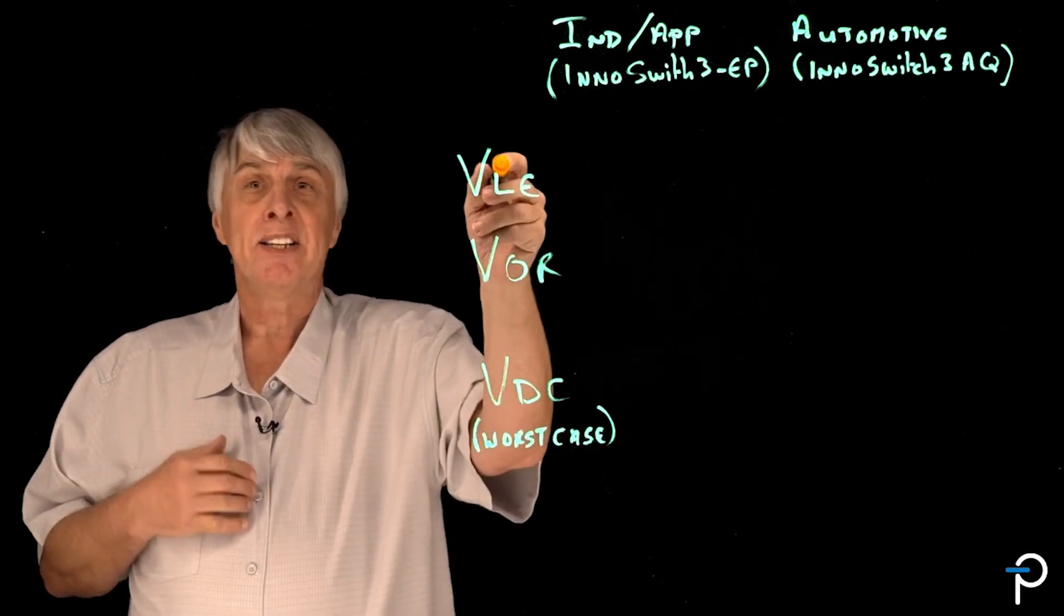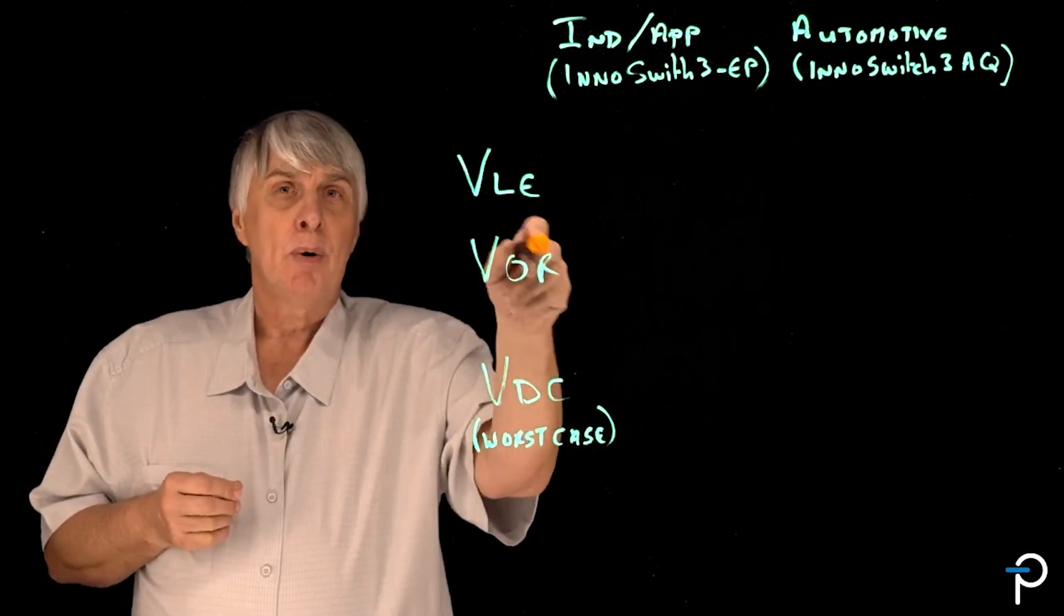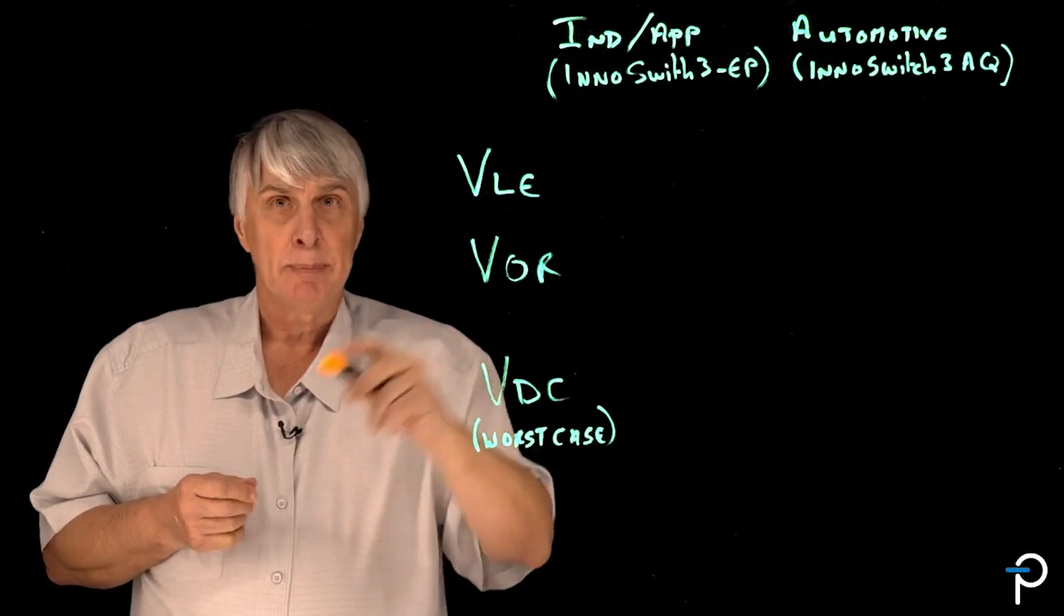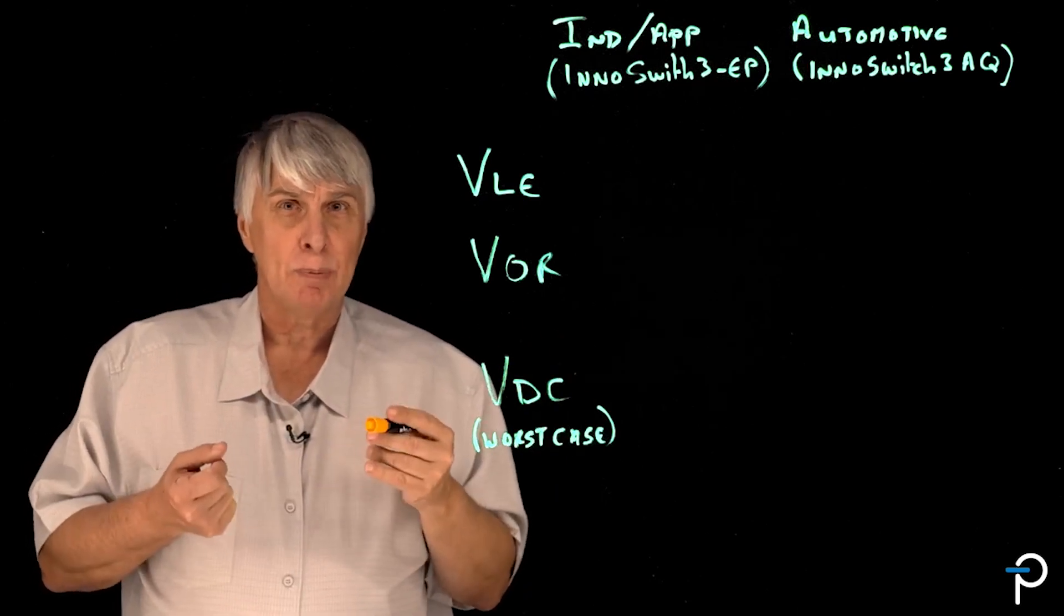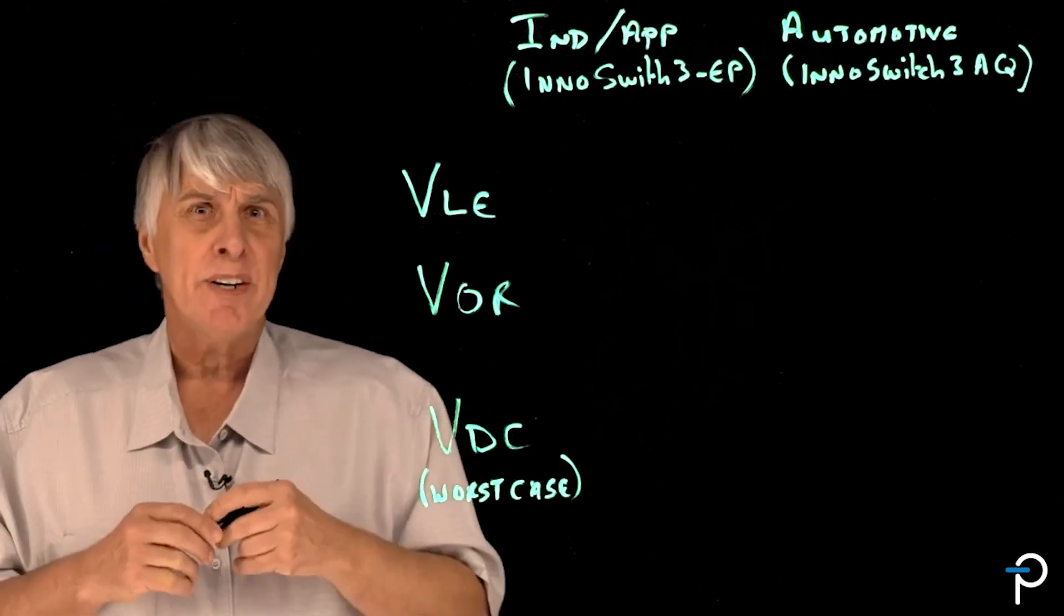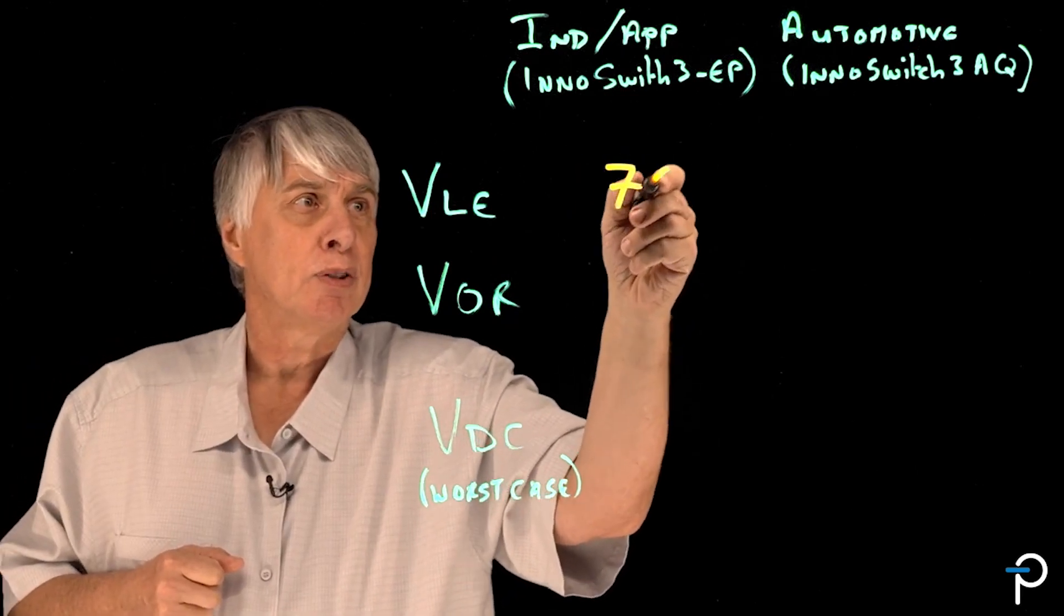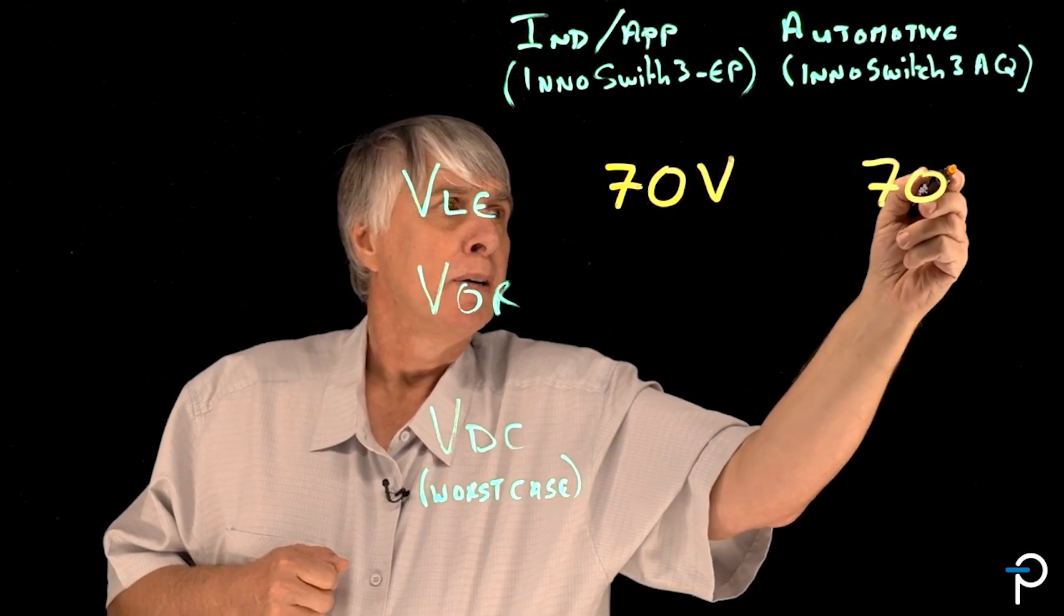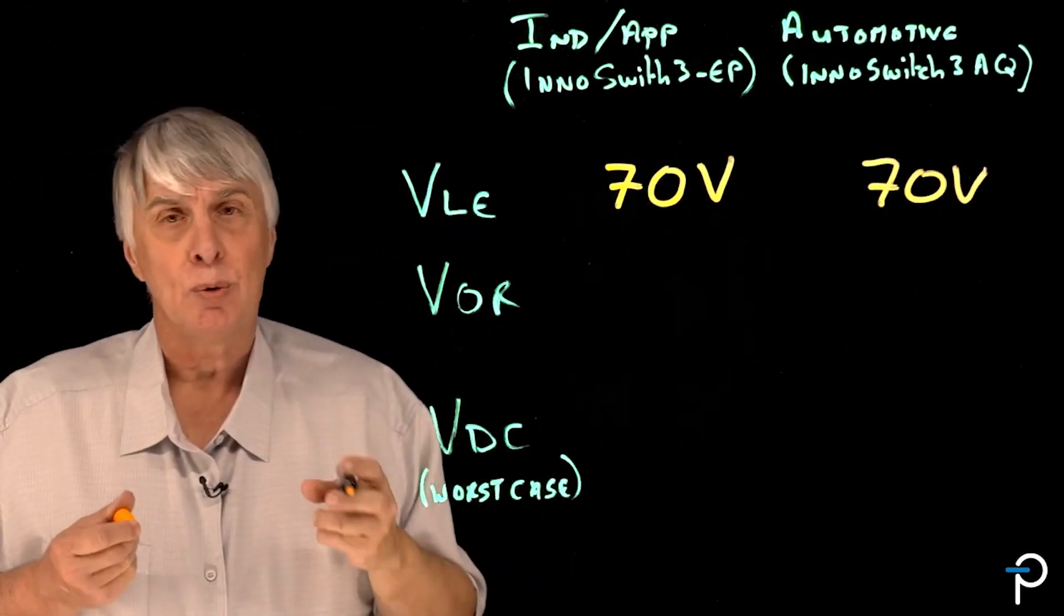As you remember we have VLE, the leakage energy from the primary clamp circuit, VOR reflected output voltage back onto the primary, and VDC, the input voltage condition. Some of these parameters we'll keep the same to keep the analysis relatively simple. Let's start with VLE. VLE is somewhat variable but we'll set a typical value for an application of perhaps around 100 watts. Let's say that's going to be 70 volts and we'll keep it the same for both a commercial application and also for an automotive design.